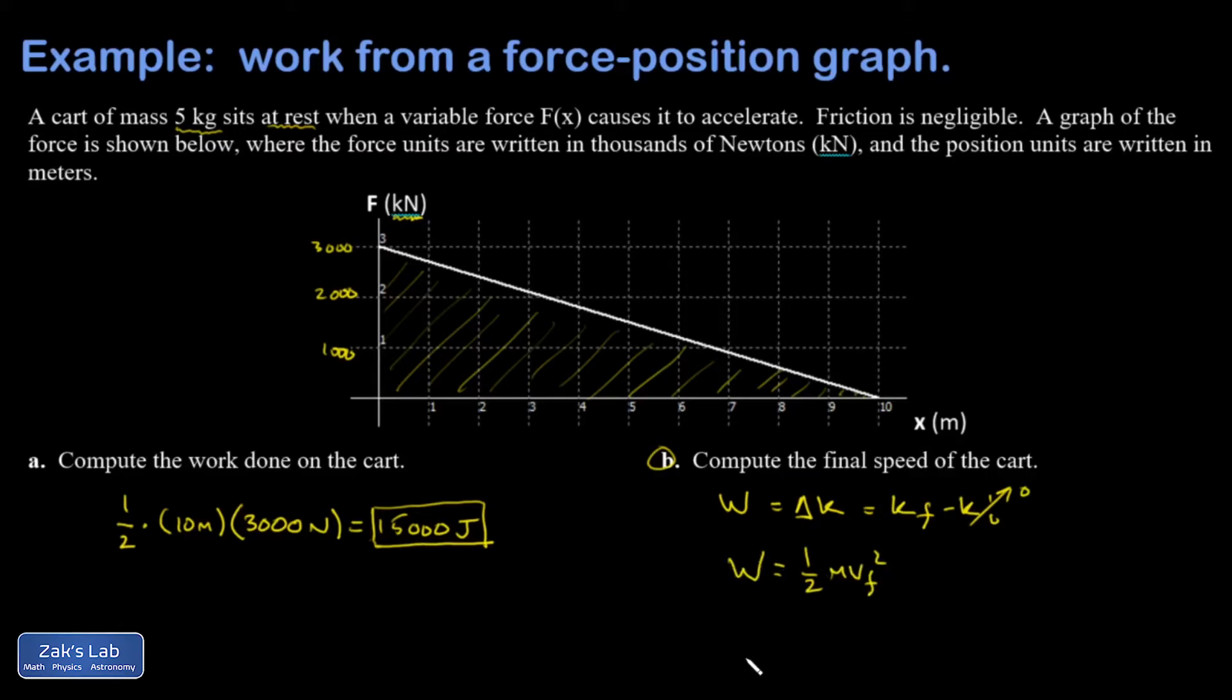The total amount of work done is going to be equal to one half times the mass times the final speed squared. If I go ahead and solve symbolically for VF, I'd multiply both sides by 2 and get 2W over M to isolate VF squared, and then I'd have to square root it.